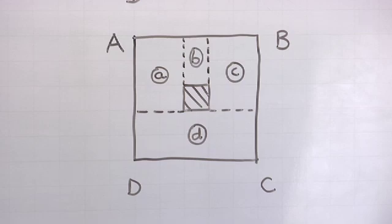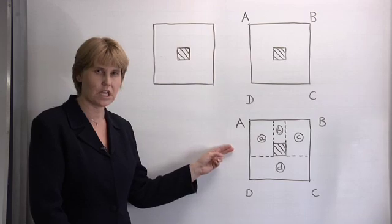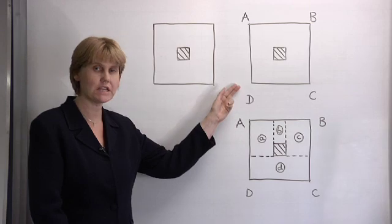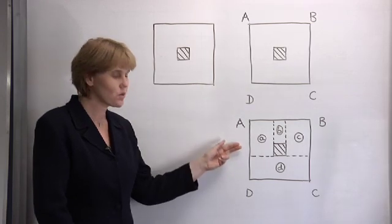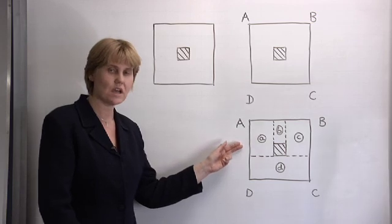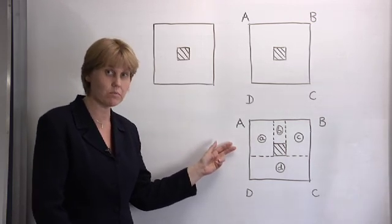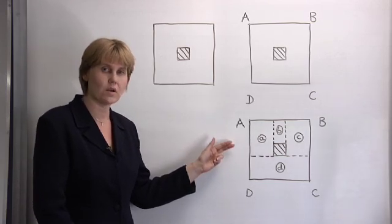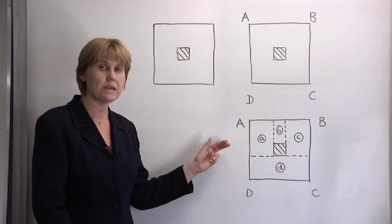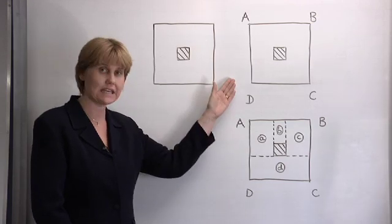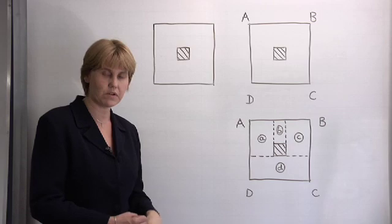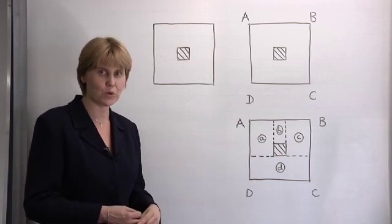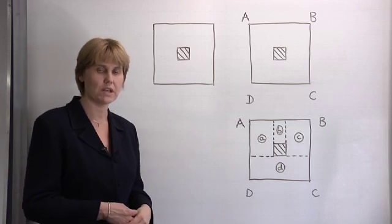Hopefully you can see that this piecemeal approach is inefficient. We have four calculations compared to just two calculations when we measure overall and deduct. As a quantity surveyor every time we put pen to paper there is a likelihood of human error. It is also more time intensive. So as quantity surveyors we must strive to adopt techniques which simplify the process, are more time effective and also avoid the likelihood of human error.